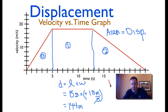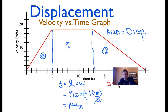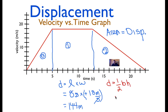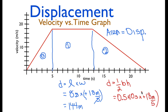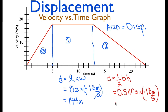Now for section two — a triangle — displacement equals one half times base times height, so 0.5 times 10 seconds times positive 18 meters per second. The base of that triangle is 10 seconds, and the height is positive 18 meters per second. We want to be careful to keep our pluses and minuses correct — positive velocity tells you the direction the object is going. Multiplying those out gives 90 meters.